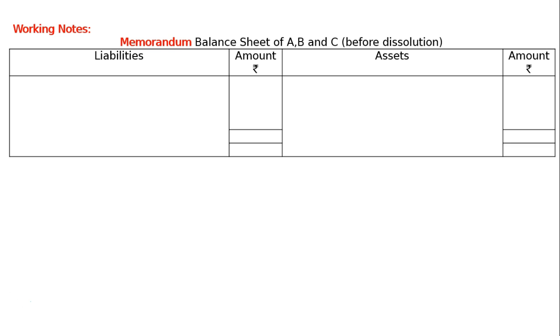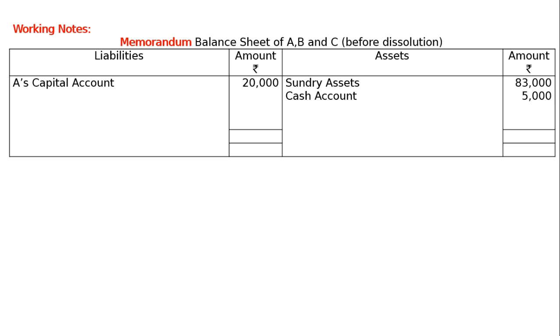In the working notes, draw the format of a memorandum balance sheet of A, B, C before dissolution. Start with the liability side by writing the capital accounts. Sundry assets is rupees 83,000, cash account is rupees 5,000, and A's capital account rupees 20,000, B's capital account rupees 20,000, C's capital account rupees 20,000. Now we have to find out the liabilities.